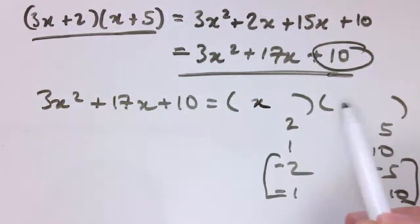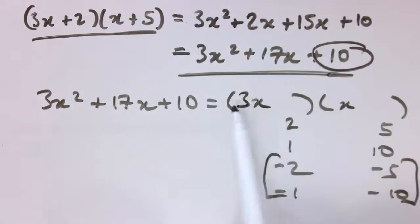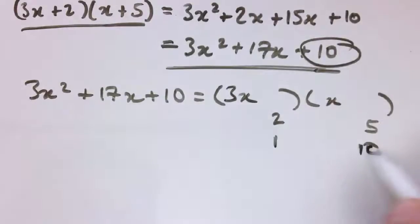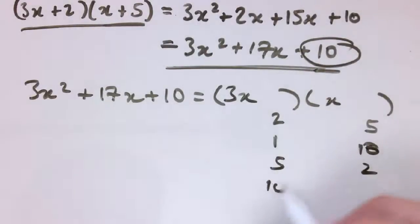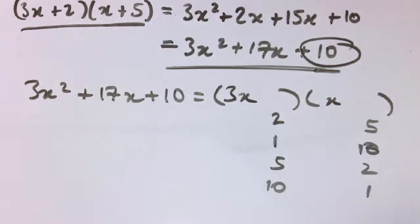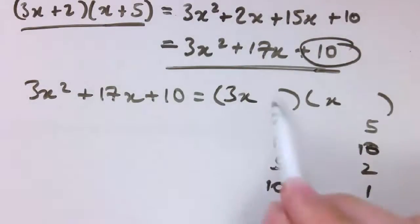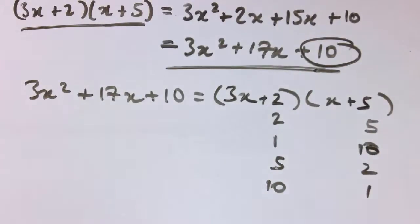For the terms that go with x, to get 3x squared it has to be 3x times x — there's no other way. With that fixed, the numerical options could be arranged as 2 and 5, 5 and 2, 1 and 10, or 10 and 1 — just four options. Checking the middle terms: 1 and 10 gives x and 30x — doesn't work; 5 and 2 gives 5x and 6x — doesn't work; but 3x plus 2 times x plus 5 works.